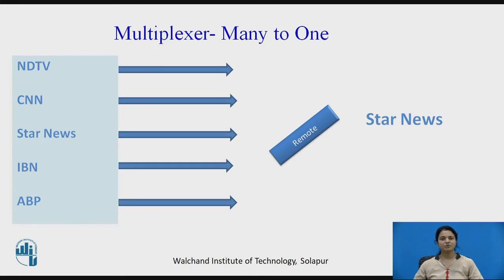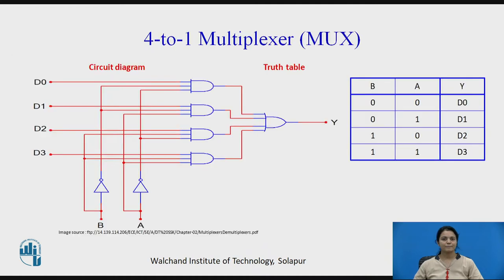We will understand multiplexer with a general example. If we want to watch one news channel, we have many options on our TV — like NDTV, CNN, Star News, IBN, ABP. If I want to choose Star News, I need a remote to select it. So the remote works as a switch to select Star News, and similarly a select line works in the multiplexer.